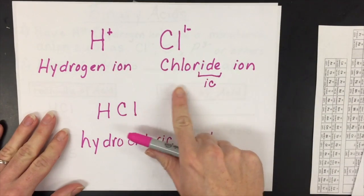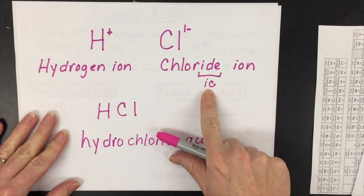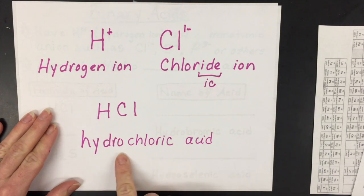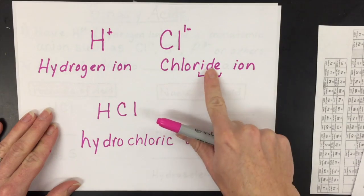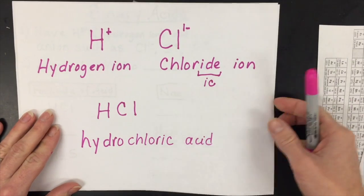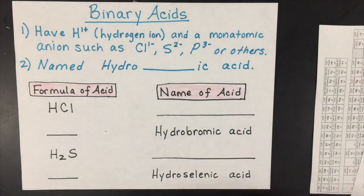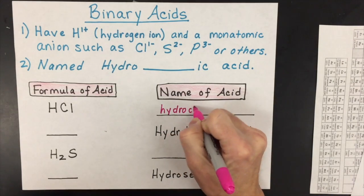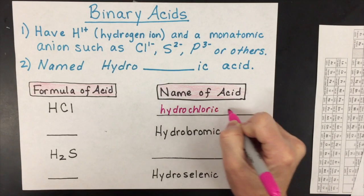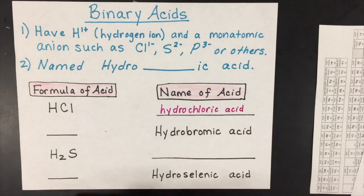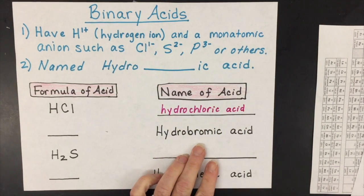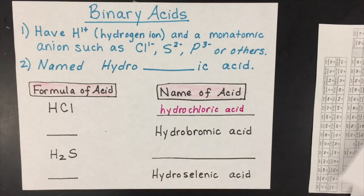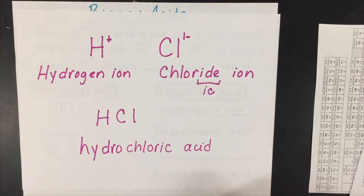For example, you have the hydrogen ion and the chloride ion. You'll take that -ide ending, change it to -ic, and then add the word hydro as a prefix. Then keep the word chlor, change the -ide to -ic, and then add acid. So the answer for the first one is hydrochloric acid.